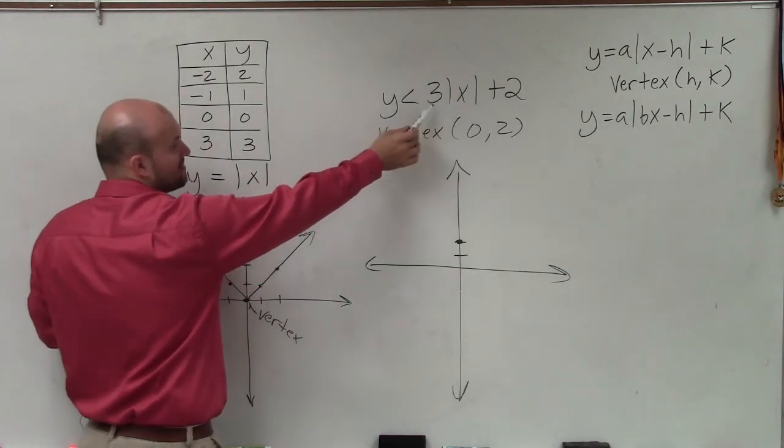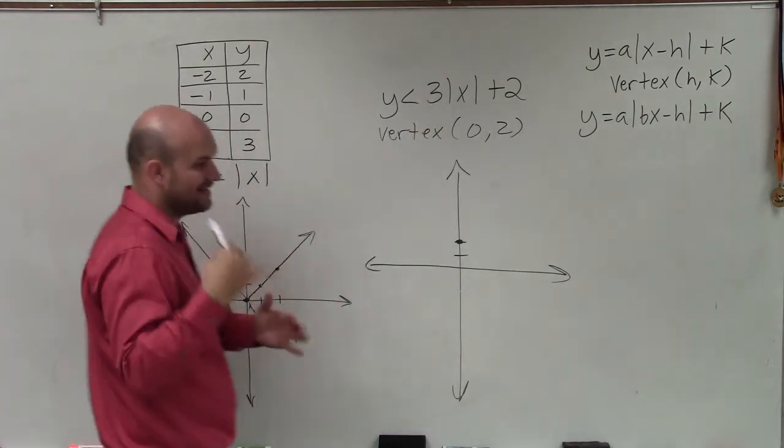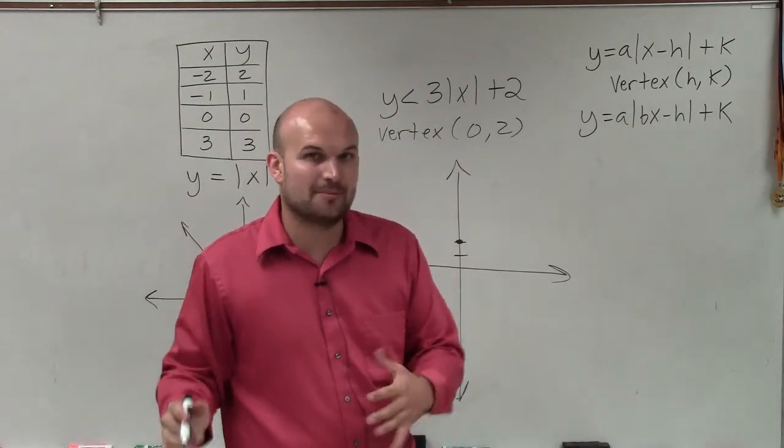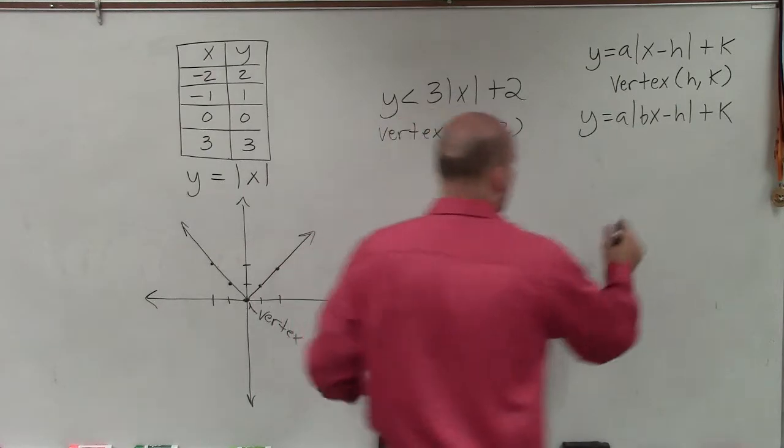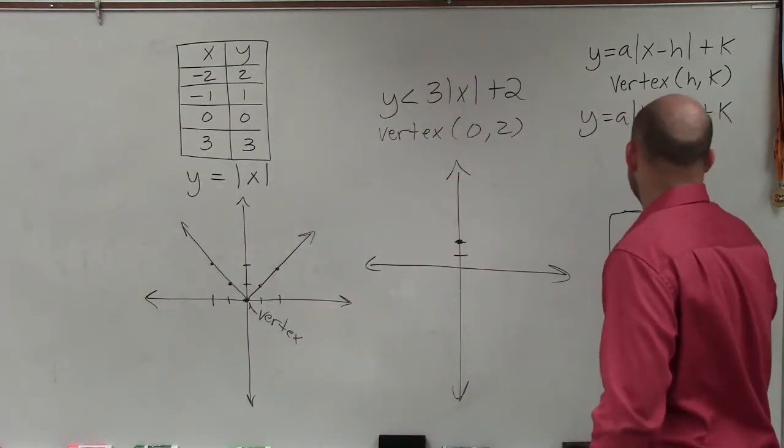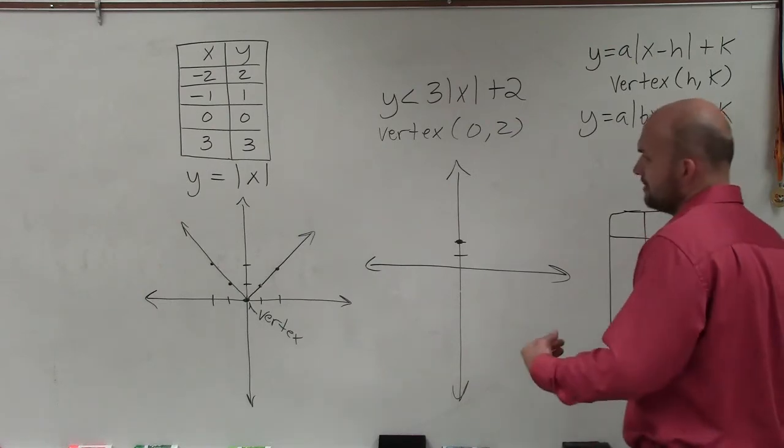Because now whatever you saw for x is being multiplied by three. But I think the easiest way to do this in the kind of full, safe way is just to use a table and just use two points. So we have our equation, or our inequality.